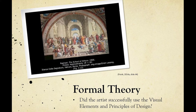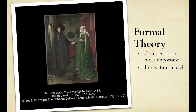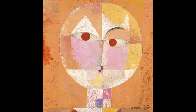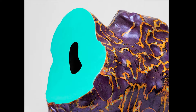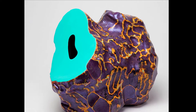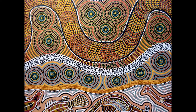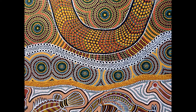Formal theory works for artworks that have more emphasis on design and style than on meaning. Abstract artworks are very formal, as well as works that emphasize aesthetic beauty.